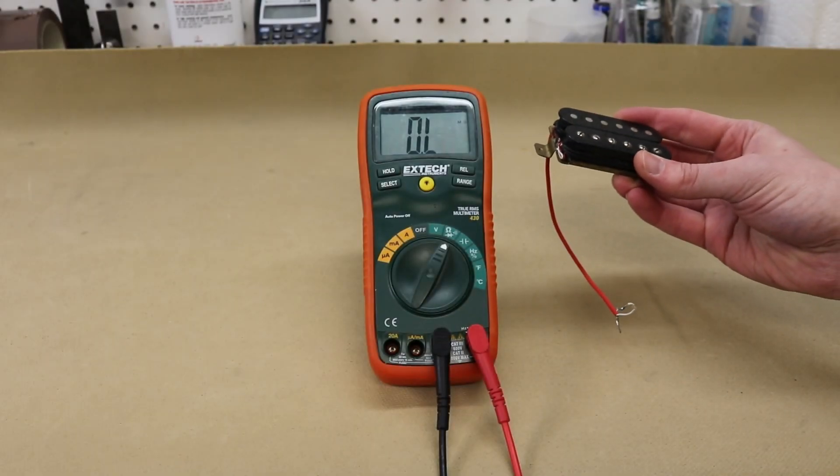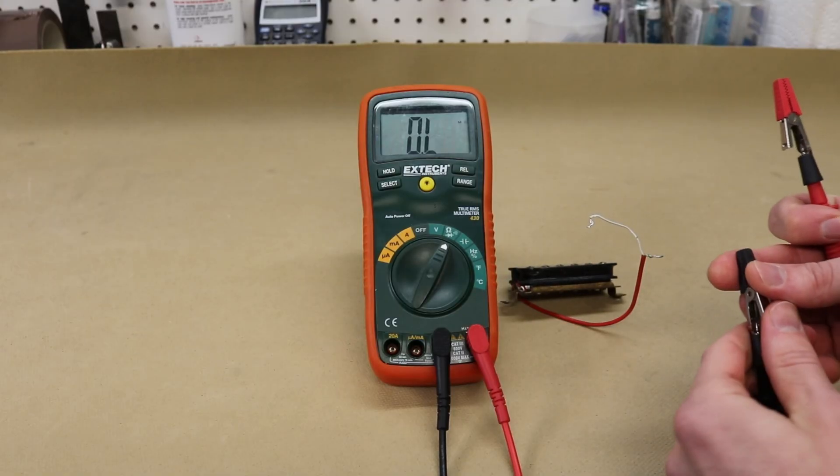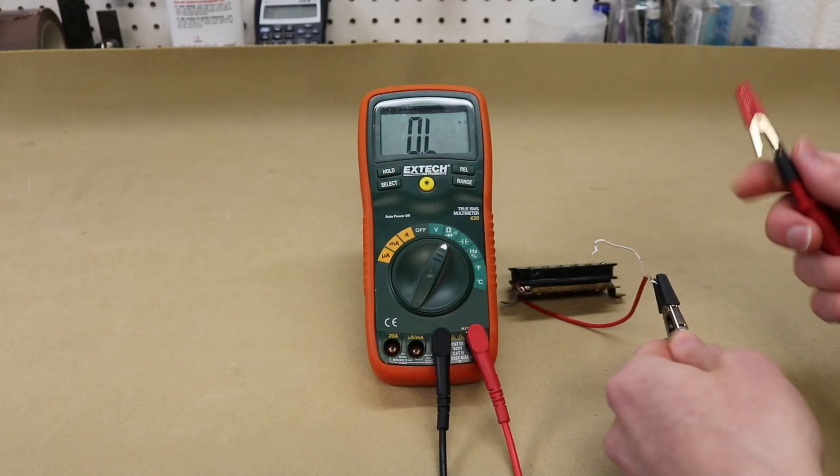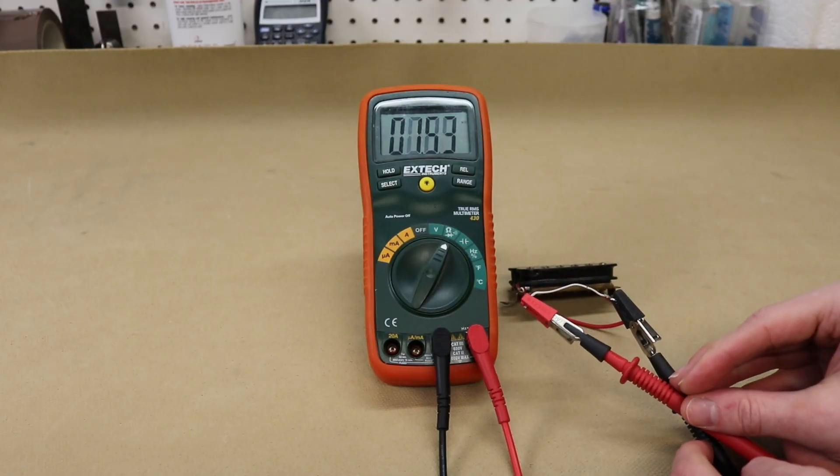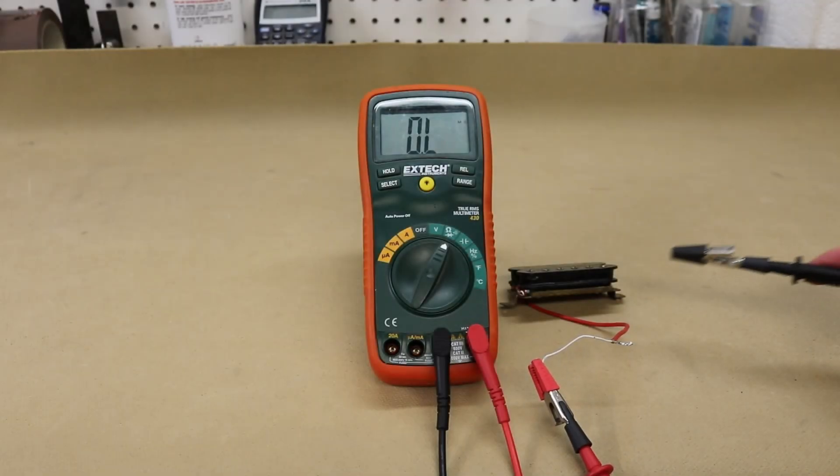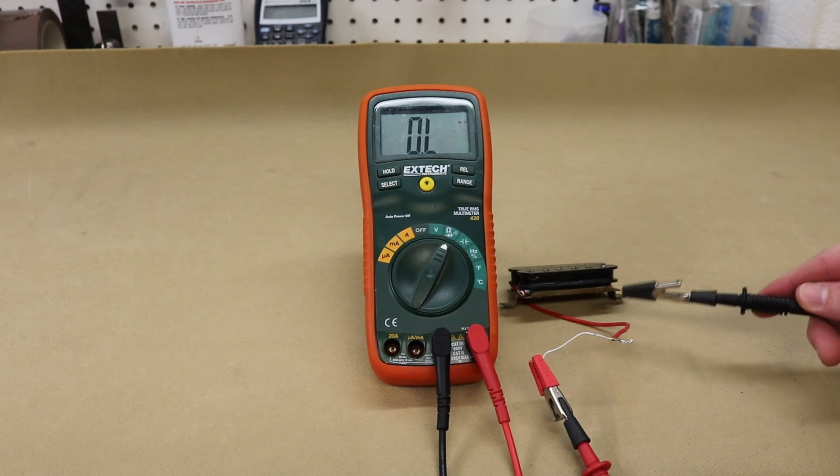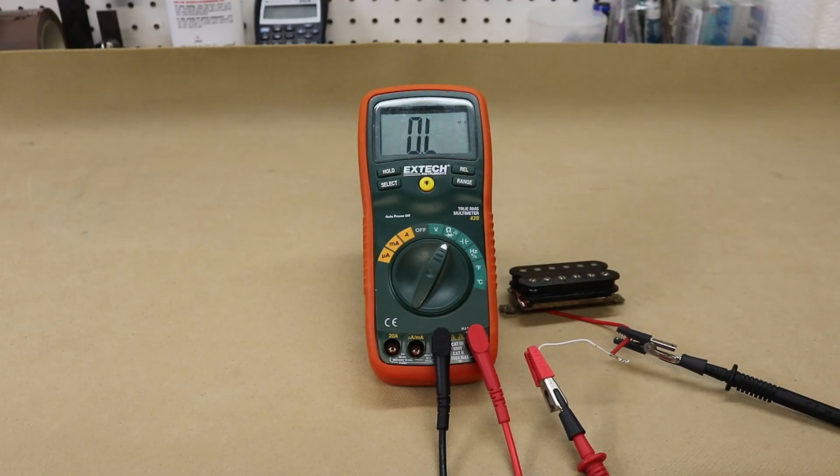For a humbucker with two wires coming off of it the process is very much the same. Take the black probe and connect it to the ground wire. The red probe connects to hot and in this case it's 15.4k ohms. If instead of this red casing you had a braided shield wire coming off of it all you would do is connect the black to the shield and it would give you a measurement.